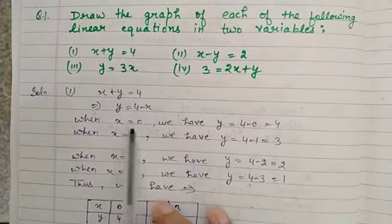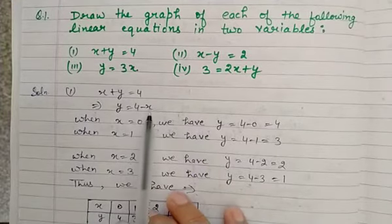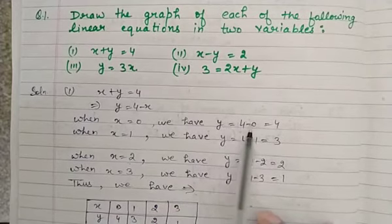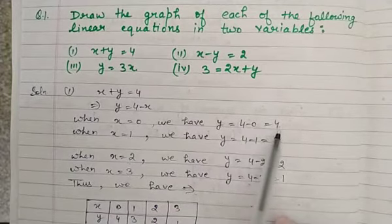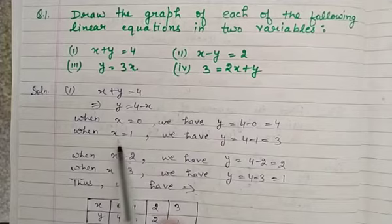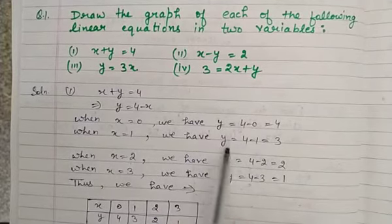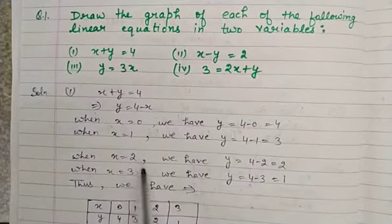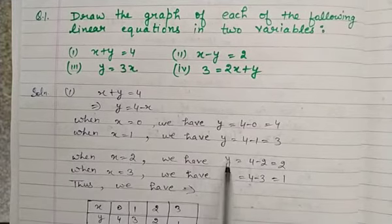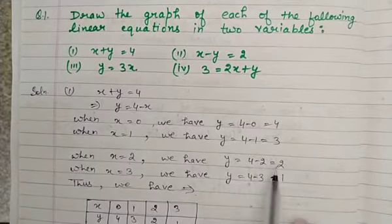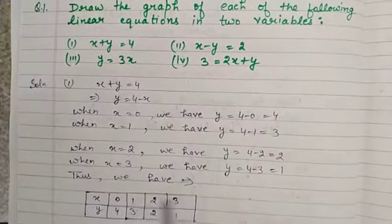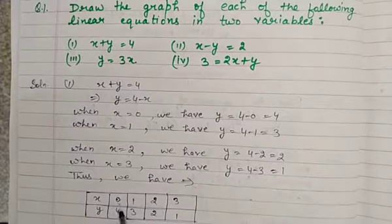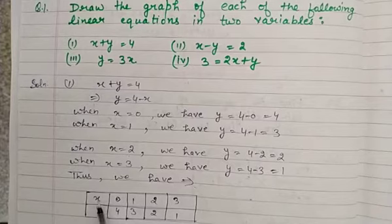If we take x as 0, then y will be 4 minus 0, which means 4. If we put x as 1, then y will be 3. If we put x as 2, then y will be 4 minus 2, which means 2. And if we take x as 3, then y will be 1.